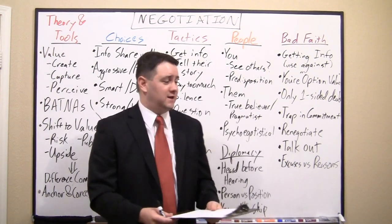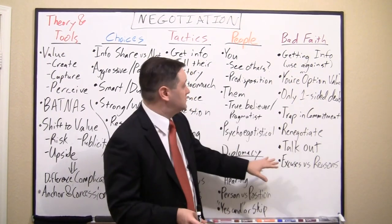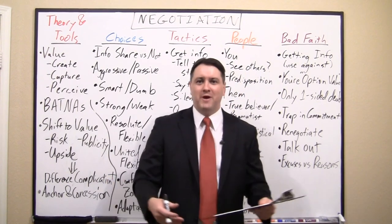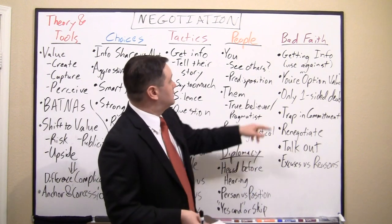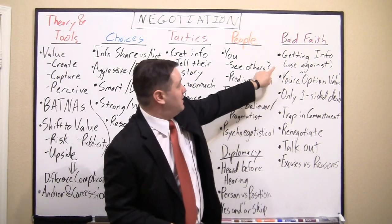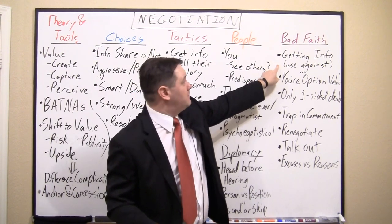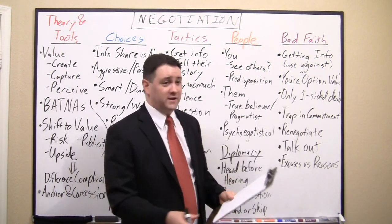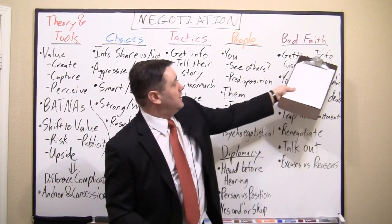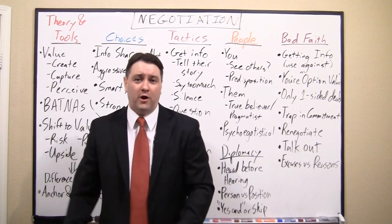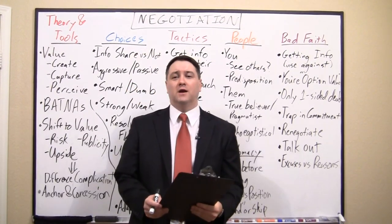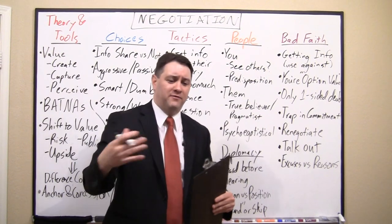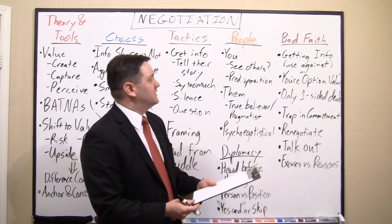Now let's talk about the darker side. In business education it's politically correct to assume the best in everyone, but that's not always true. Some people negotiate not because they seek an agreement, but because they want information about your business, your priorities, your position — to use against you later, trap you into saying something silly, make you comfortable enough to admit something you shouldn't, or provoke an exaggerated reaction to embarrass you.